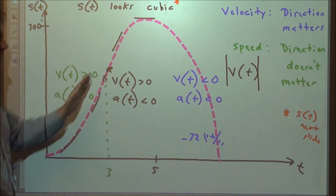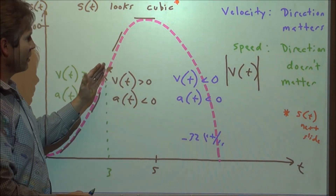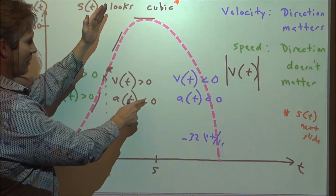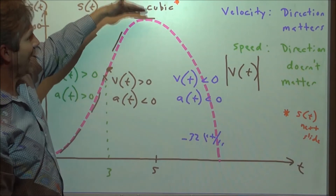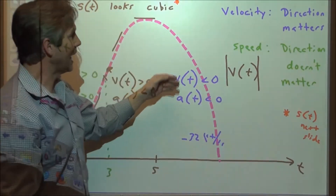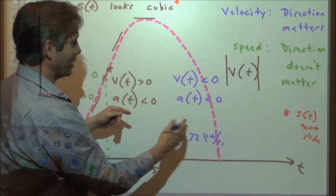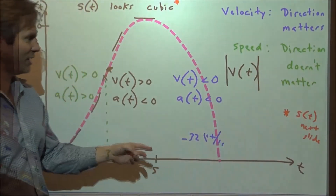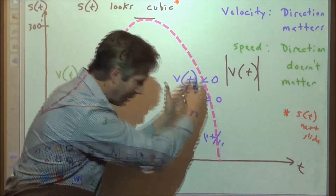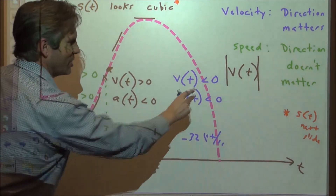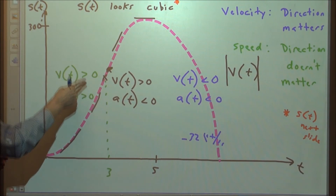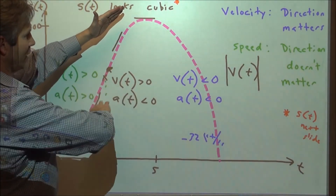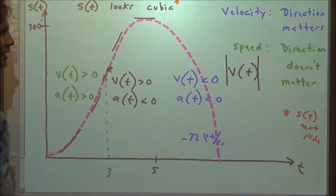Here's the key rule: in the first interval, the acceleration and velocity share the same sign — both positive — so the car is speeding up going towards the 300-foot mark. At the point of inflection through to the maximum, the velocity is positive but the acceleration is negative, so the car is slowing down. Once past the maximum, both velocity and acceleration are negative — the car is going backwards faster and faster, speeding up in the negative direction. Whenever the velocity and acceleration have the same sign, the object is speeding up; when they have opposite signs, the object is slowing down.